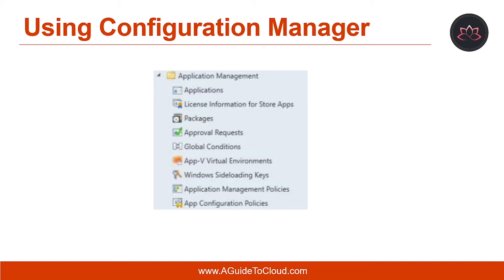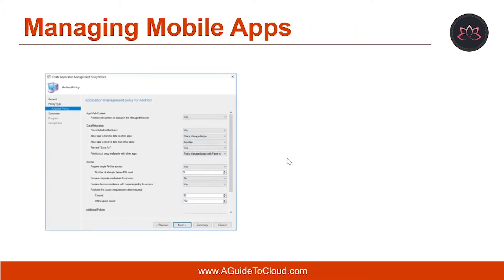In Configuration Manager, you can deploy apps by configuring applications or by using the traditional method of configuring packages and programs. Both methods allow you to deploy apps to client devices. An application contains built-in intelligence such as the ability to deploy different types of apps based on the properties of the client device. However, packages and programs may be more efficient for running simple commands or custom scripts on client devices.